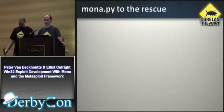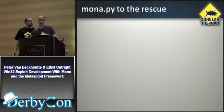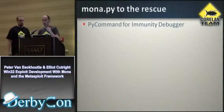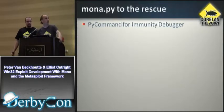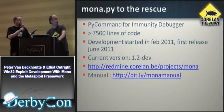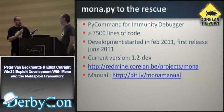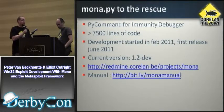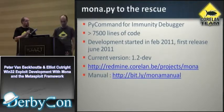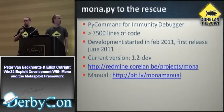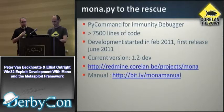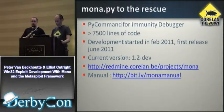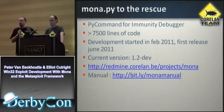In February 2011, we started developing mona.py — it's a Python script, a py command for Immunity Debugger. If Immunity would have been using Ruby, I would have written it in Ruby. It's a pretty good-sized file — one of the largest single Python files an instructor had ever seen. Development started in February, released in June. We're currently at version 1.2 dev. This is a full replacement and rewrite for pvefindaddr. If you're still using that plugin, please switch to Mona — it's faster with a lot more functionality. You can grab it at redmine.coreland.be.